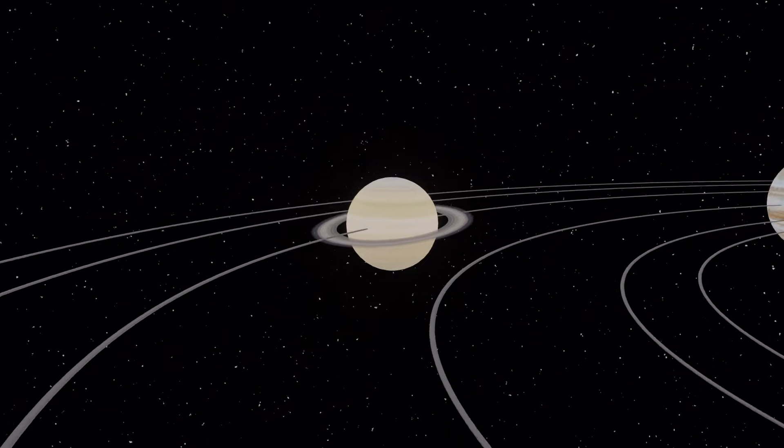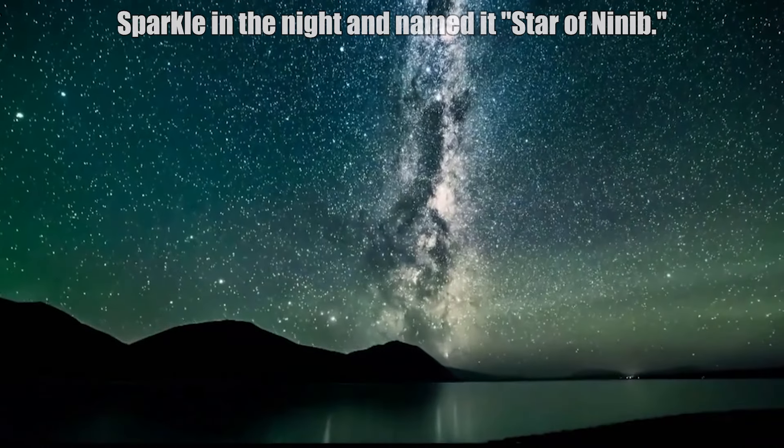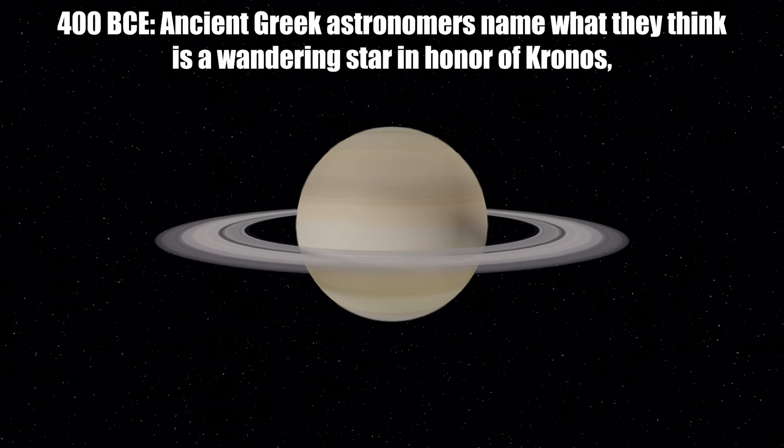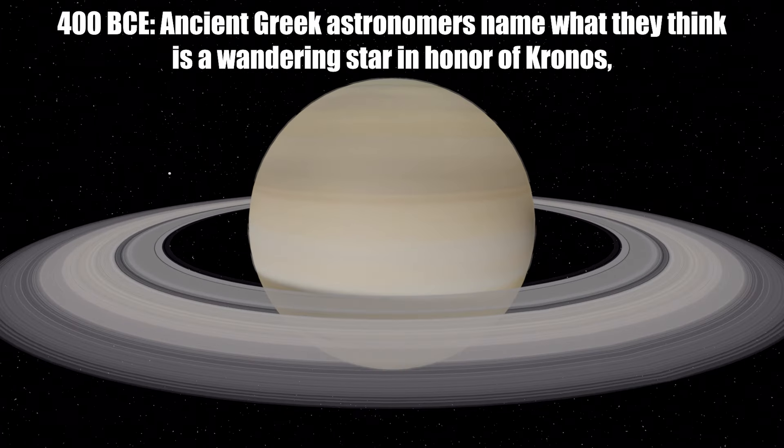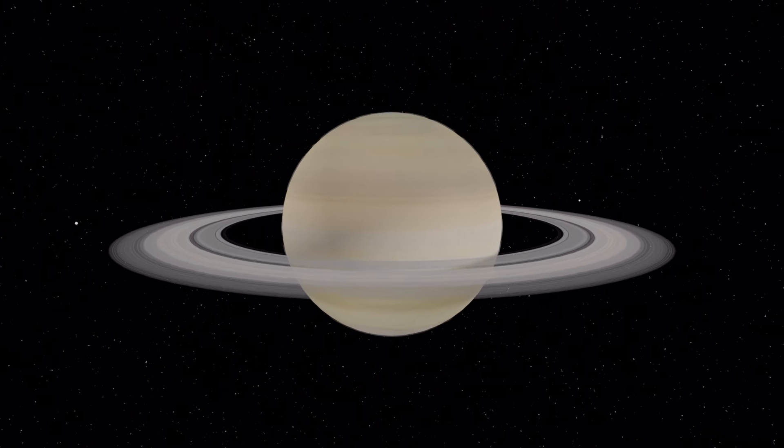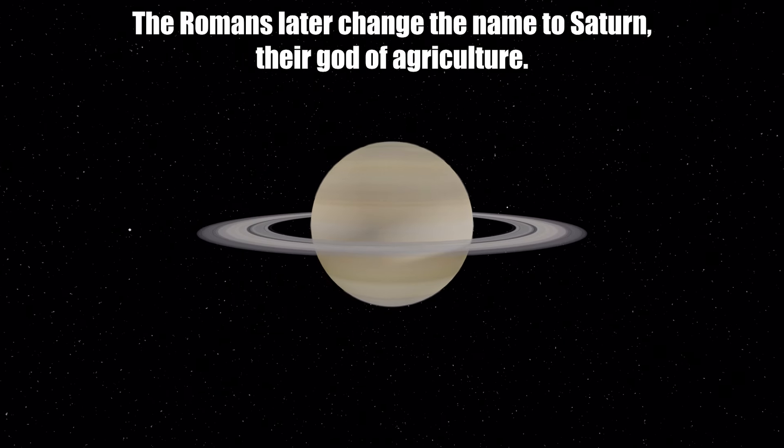400 BCE, the ancient Greek astronomers named what they thought was a wandering star in honor of Kronos, the god of agriculture. The Romans later changed the name to Saturn, the god of agriculture.